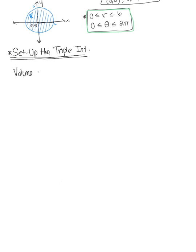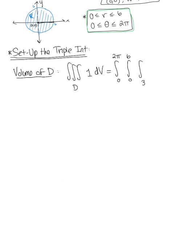The volume of our solid region D is defined as a triple integral over D with integrand 1 and differential dV. Letting theta be the outer variable, we have the integral from 0 to 2π, the integral from 0 to 6, and the integral from 3 to 12 minus one-fourth r squared. The differential in cylindrical coordinates is r dz dr dθ. We are ready to evaluate.